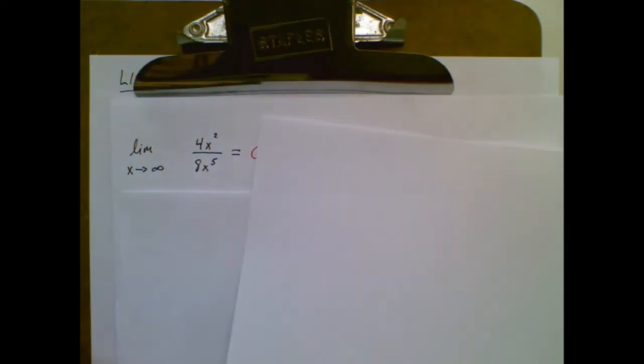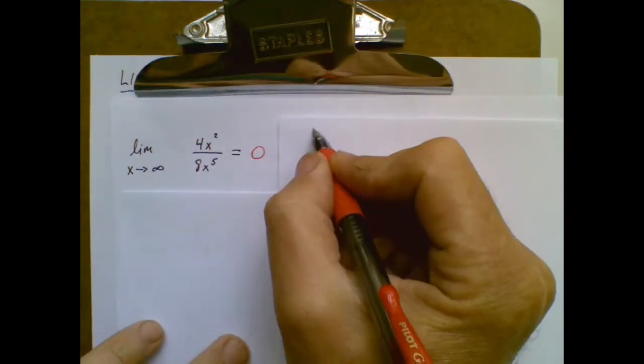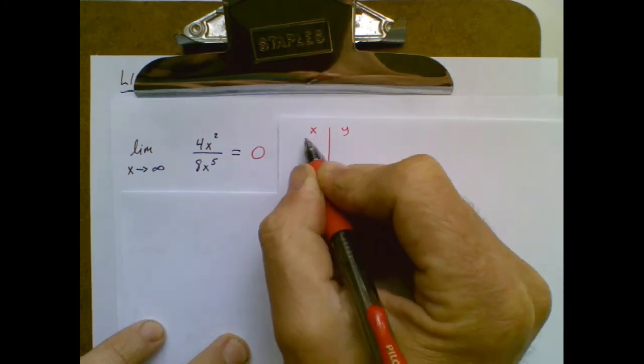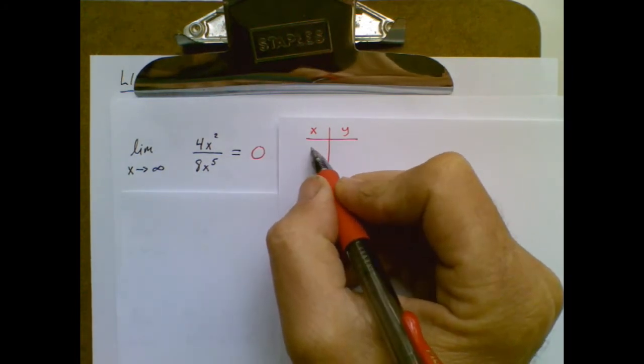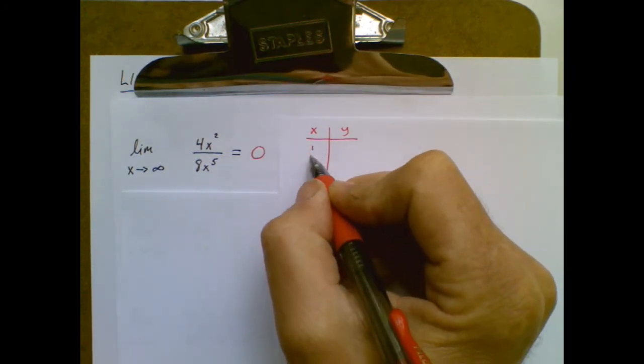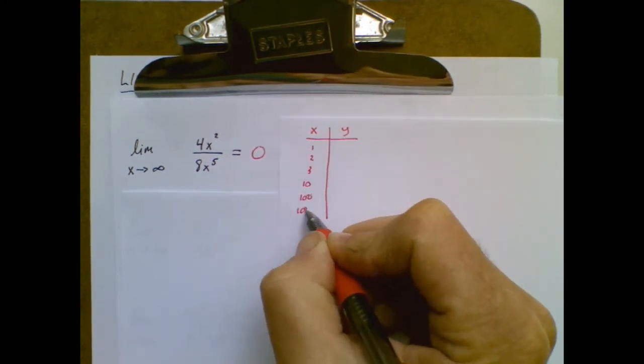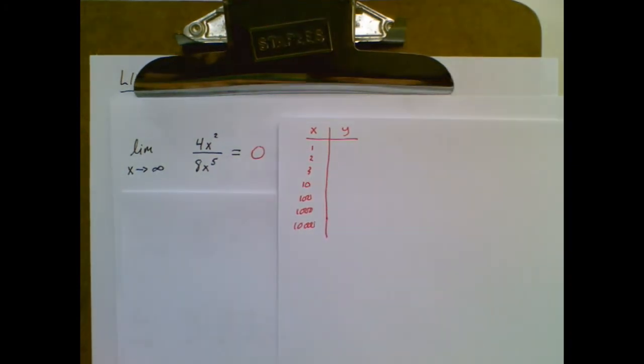So this is in t-chart form the thinking that's going to go on in your brain. I see that I'm going to approach infinity. So in my brain or on paper, either one, I start to make this t-chart and I mimic x approaching infinity. So I might go 1, 2, 3, 10 and so on.